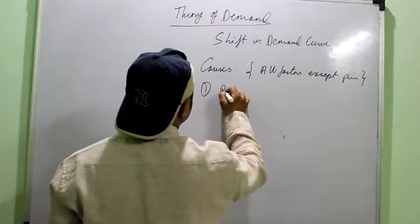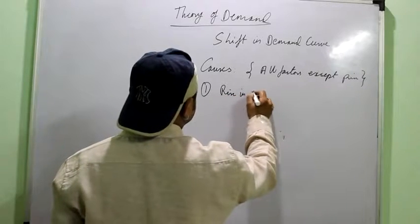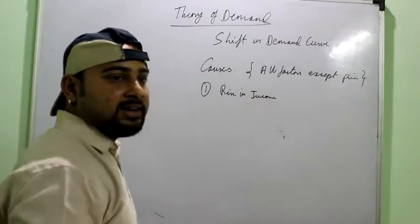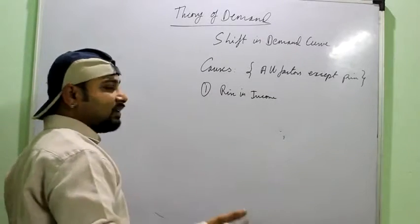First could be rise in the income. If the income of the buyer has increased, then he will buy more even at a higher price or he may buy more at the same price.